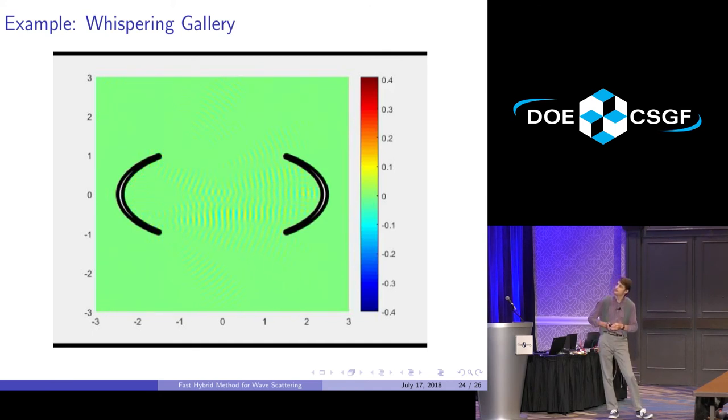This is dispersionless, so the overall accuracy of the method here is maybe 10 to the minus 6 or 10 to the minus 7, possibly. So this is quite accurate, and this can be solved on a small cluster.